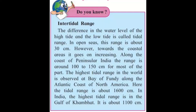Do you know? Intertidal range: The difference in the water level of the high tide and the low tide is called tidal range. In open seas, this range is about 30 cm. However, towards the coastal areas, it goes on increasing. Along the coast of Peninsular India, the range is around 100 to 150 cm for most of the part. The highest tidal range in the world is observed at the Bay of Fundy along the Atlantic coast of North America — here the tidal range is about 1600 cm. In India, the highest tidal range is in the Gulf of Khambhat, at about 1100 cm.